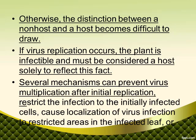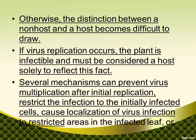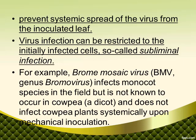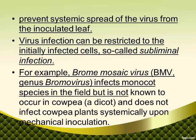These mechanisms can restrict the infection to the initially infected cells, causing localization of virus infection, or prevent systemic spread of the virus from the inoculated leaf. Virus infection can be restricted to the initially infected cells — so-called subliminal infection. For example, brome mosaic virus infects monocot species in the field but is not known to occur in cowpea, a dicot, and does not infect cowpea plants systemically upon mechanical inoculation.